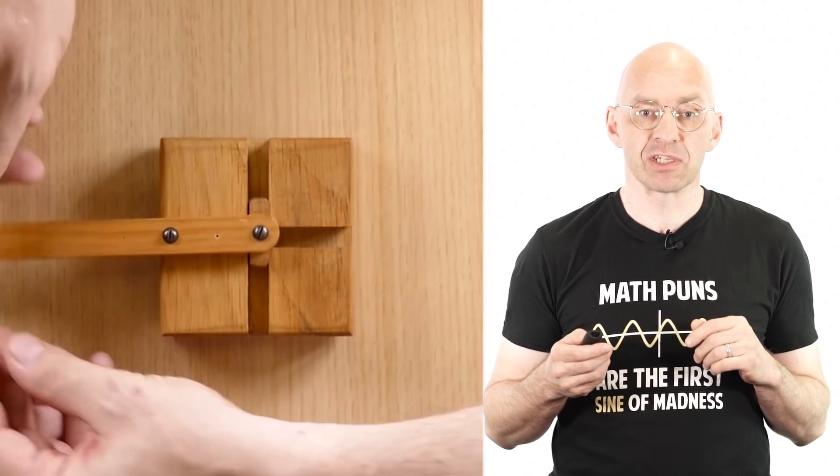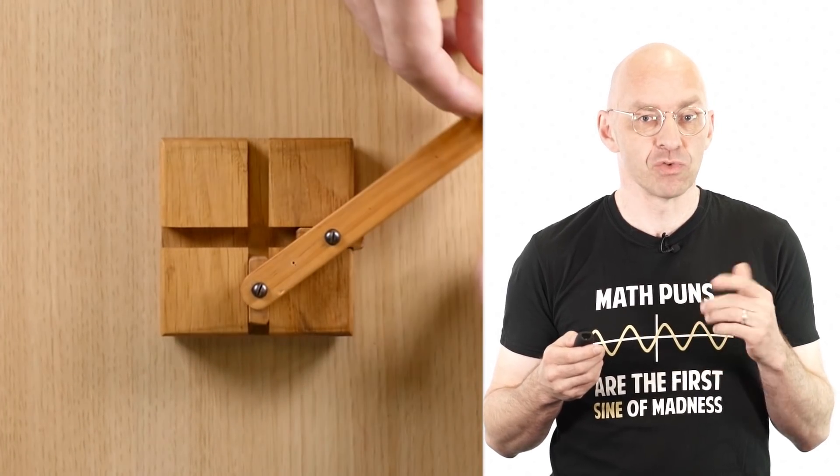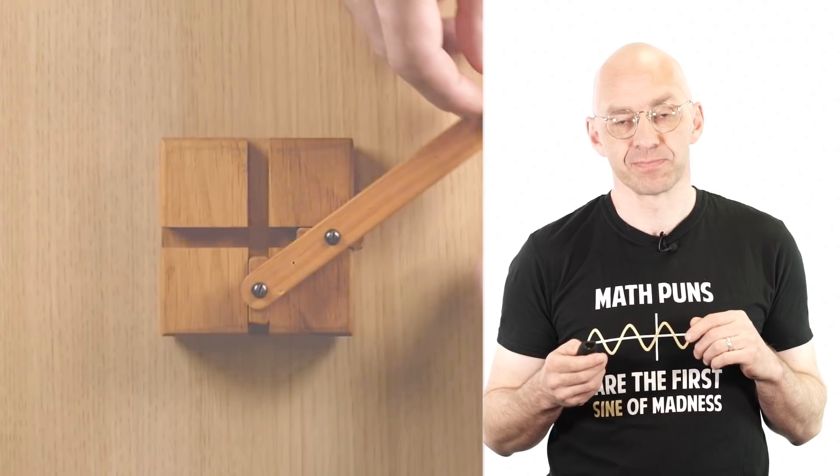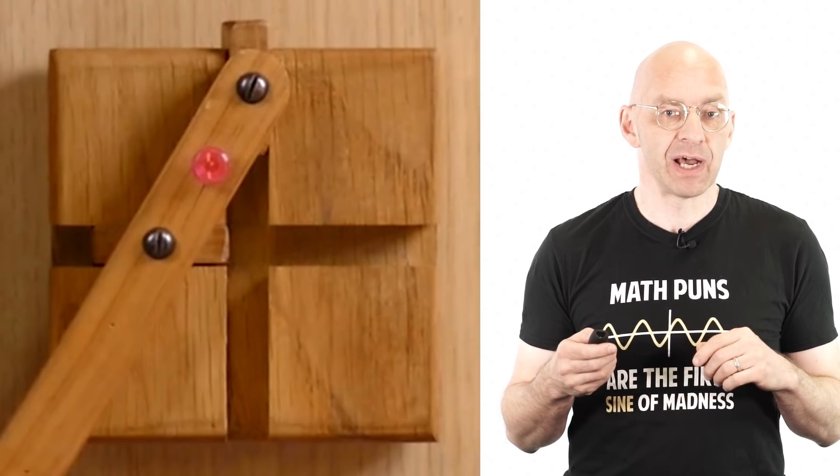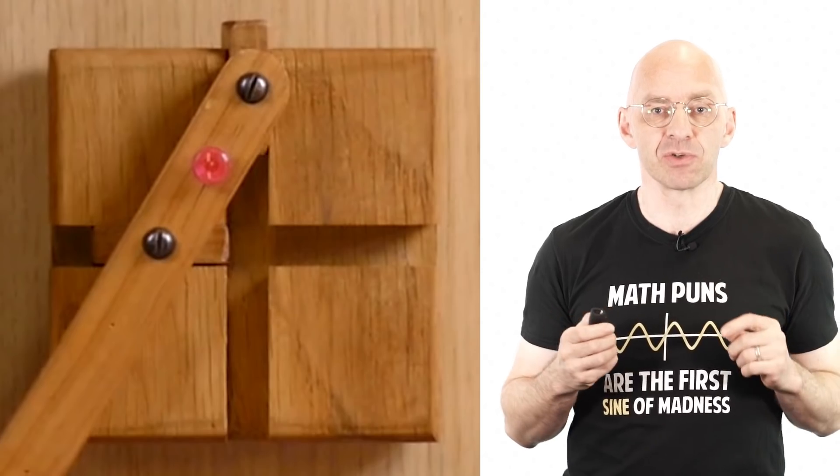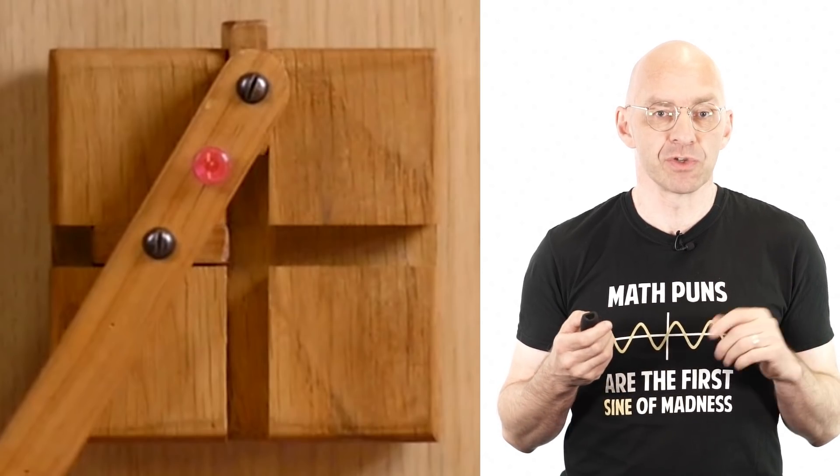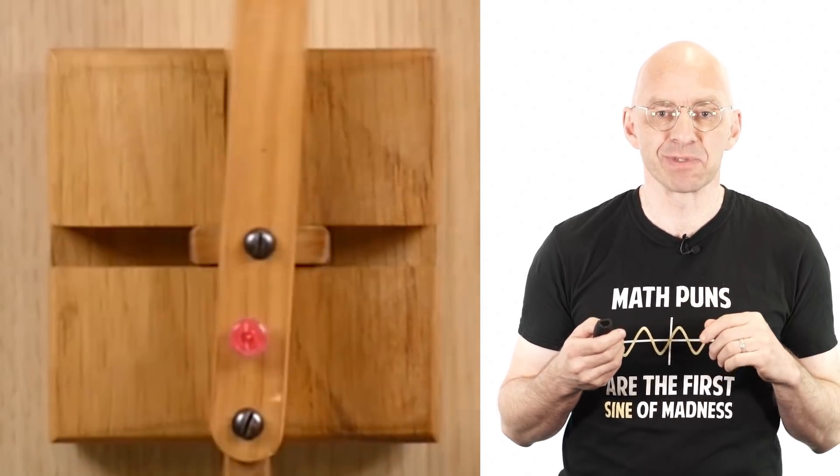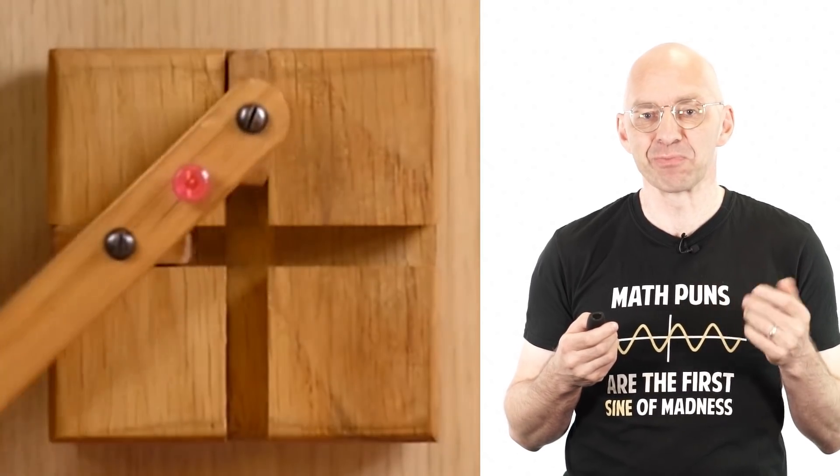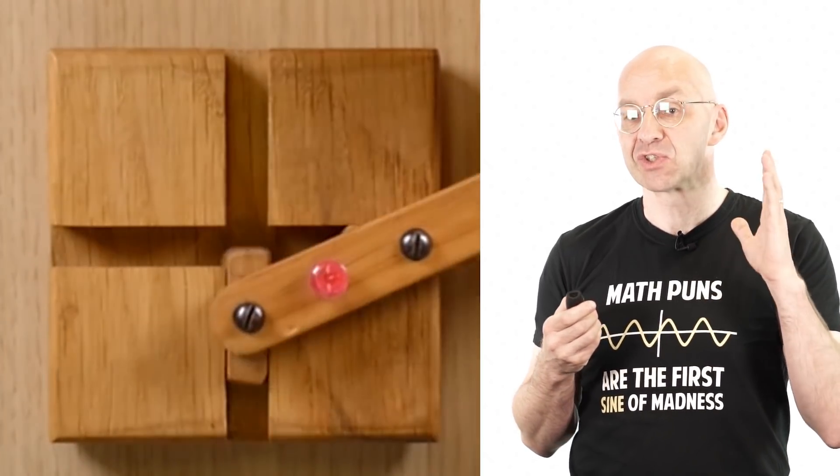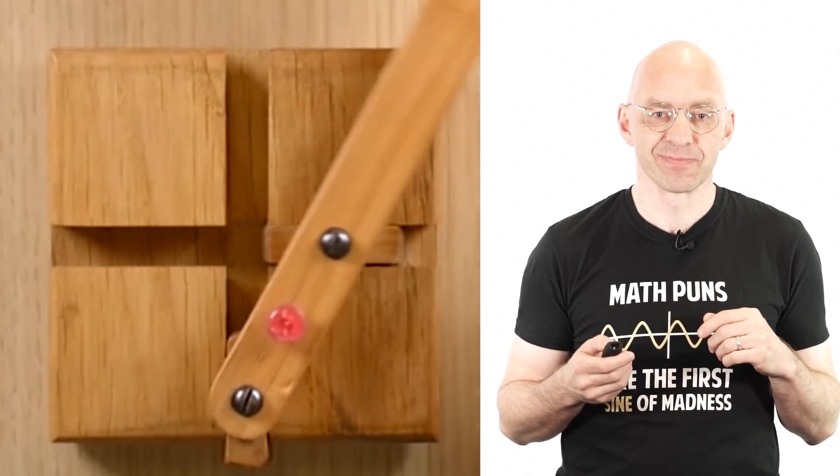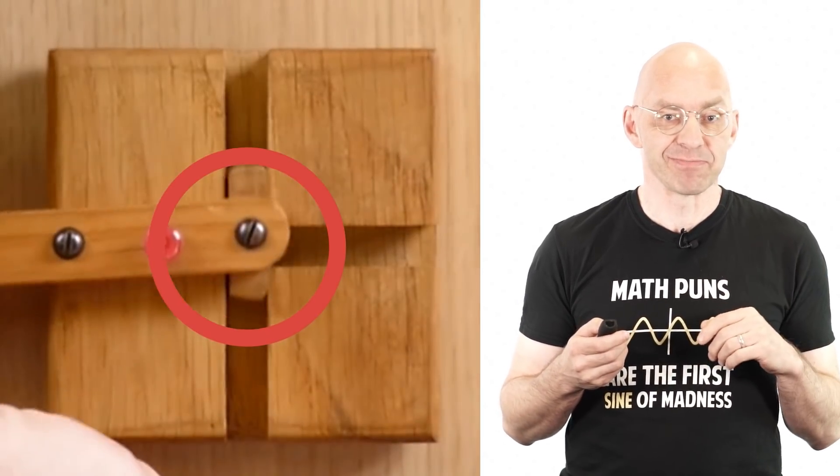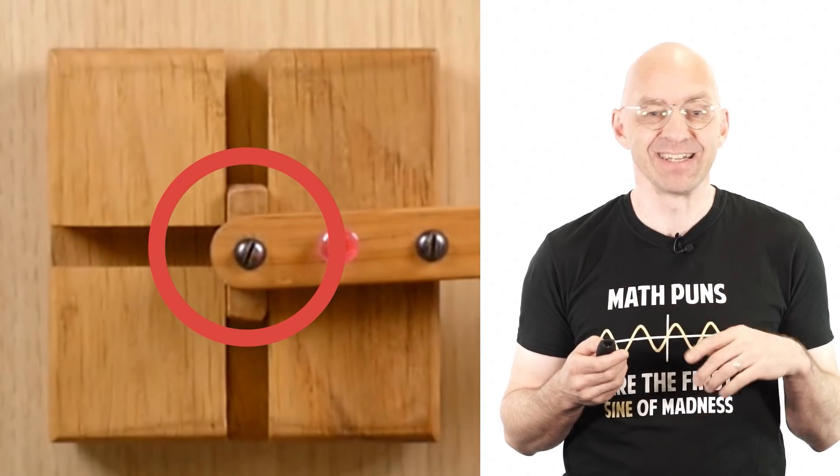But first impressions can be misleading. Let's zoom in to have a closer look. Here I've highlighted the point on the arm exactly in the middle between the two screws. What curve do you think it draws? Well of course anytime someone asks you that it's a good bet that the answer is a circle. And it sure looks like a circle. And looks are not deceiving. Yep, it's a circle. Neat, huh?